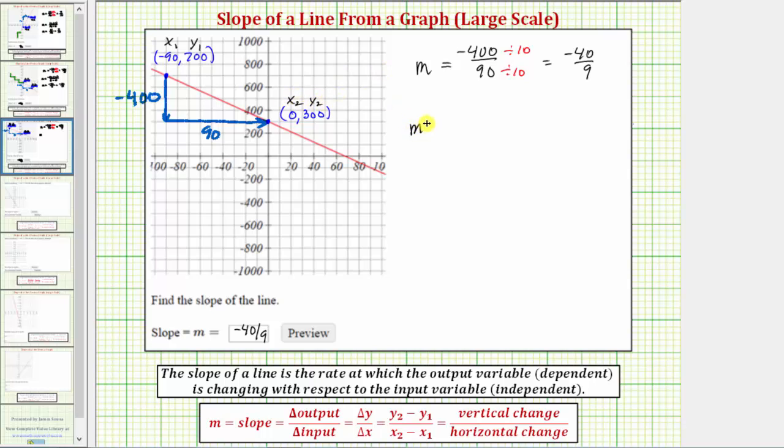So the slope m equals, again we'll have the quantity y₂ minus y₁ divided by the quantity x₂ minus x₁. So y₂ minus y₁ is 300 minus 700, and x₂ minus x₁ is 0 minus negative 90.